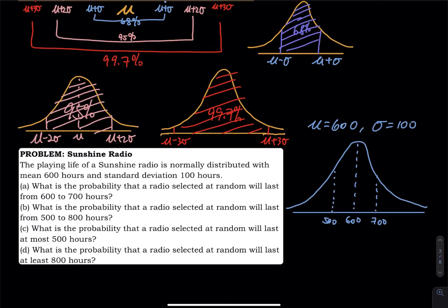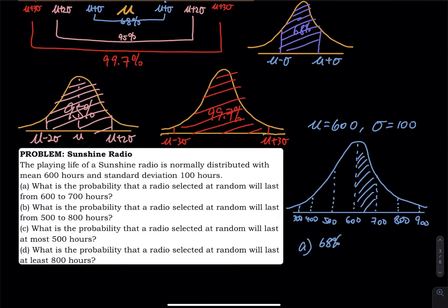Adding 200 to the right gives 800, two steps to the left gives 400, and we also have 300 and 900. That divides the graph into pieces. Part (a) asks for the probability from 600 to 700 — that is one half of 68%, which is 34%.